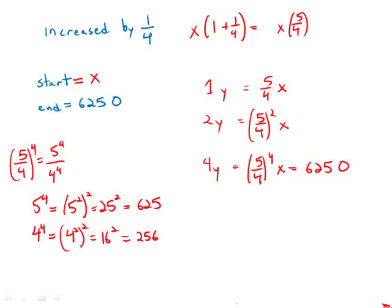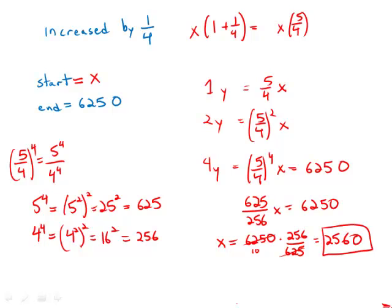So the fraction turns into 625 over 256 times X equals 6,250. Multiply by the reciprocal, X equals 6,250 times 256 over 625. And we get some amazing cancellation. This divided by this is just 10. And so what we get is 10 times 256, which is 2,560. And that is the original number of trees in the orchard. Answer choice D.